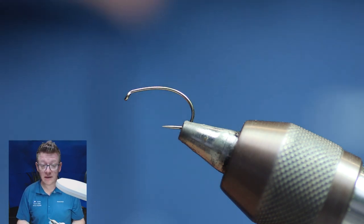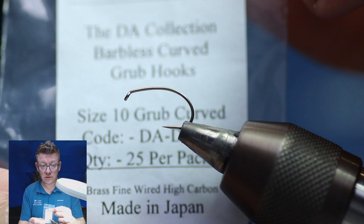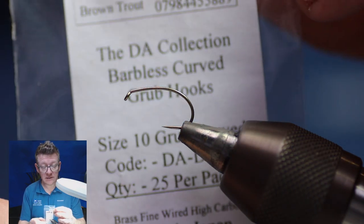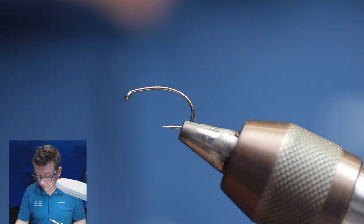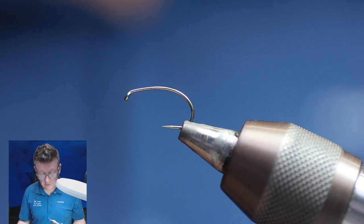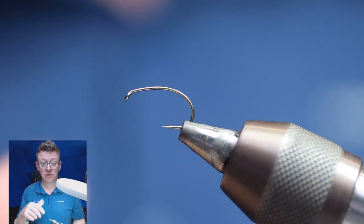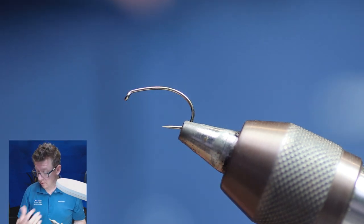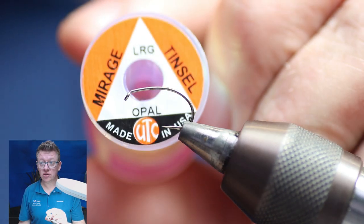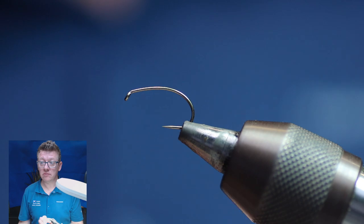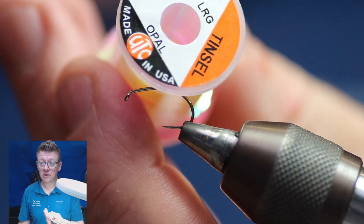In the vise I've got a size 10 barbless hook, they are my own hooks. It's quite a big hook but they're really good and I do like bronze curved hooks. We're going to need some curved hooks - you could use a B110, you could use a Fulling Mill equivalent, just whatever your favorite curved grub hook is. We're going to need some Mirage, some large Mirage.